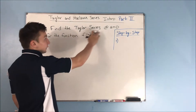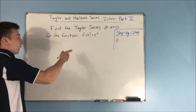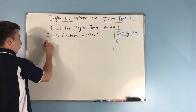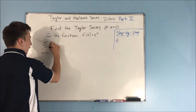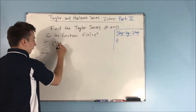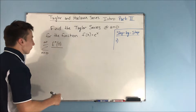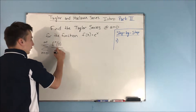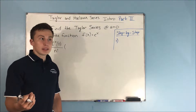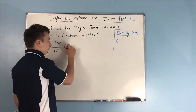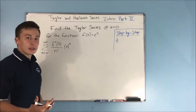A Taylor series at a equals 0 is also known as a Maclaurin series. That's what a Maclaurin series is — it's a Taylor series at a equals 0. So the format for that is the sum from n equals 0 to infinity of the nth derivative of f at 0, over n factorial, times x to the n. Since our a is 0, we just get x to the n.